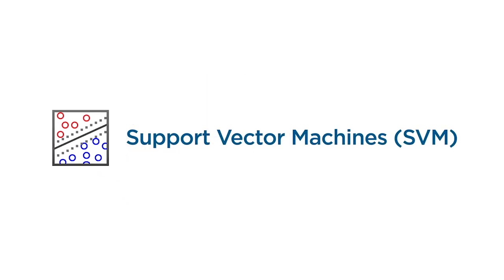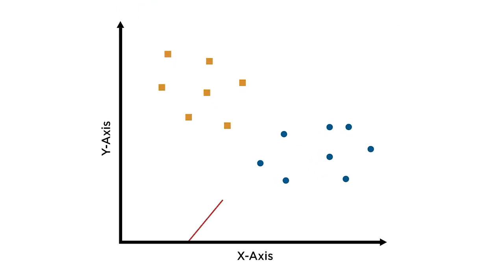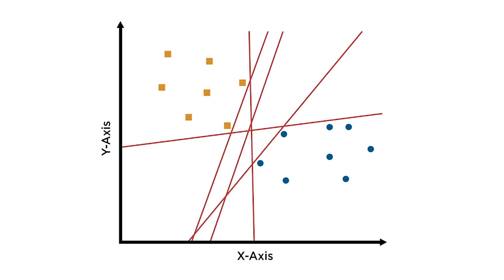You may remember SVM models as being an option for regression. SVM models are also a popular choice for classification because of their flexibility. In the binary classification problem, suppose you want to separate the orange squares representing no toll from the blue circles representing toll. Any line shown on this plot is a viable option. They would all perfectly separate the orange squares from the blue circles. But is there an optimal line or decision boundary?